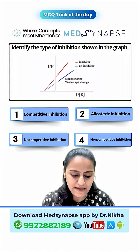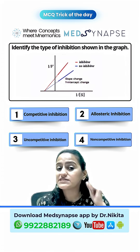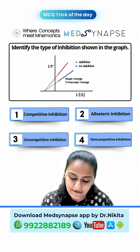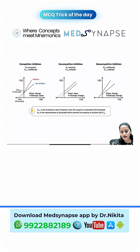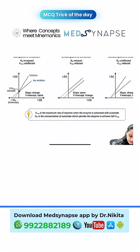Identify the type of inhibition shown in the graph. What is a very easy trick to identify this? Let's have a look at the three graphs. What you have to do is just look at the lines. If the two lines are crossing each other, remember that crossing lines — C for C — is competitive inhibition.